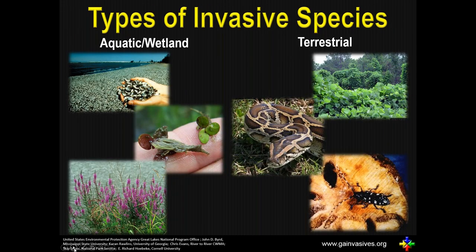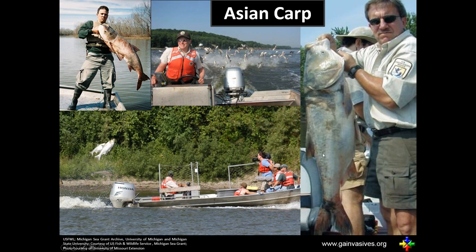There are all types of invasive species — aquatic and terrestrial. One of the aquatic species is Asian carp; there are actually a couple of different species. You can see them jumping in the pictures here. In the bottom picture, you can see nets the researchers have to protect themselves. Look how high they're jumping over the boats. People have actually been hospitalized after being hit by these fish jumping over the boats.